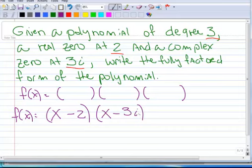Now the other thing you need to remember is according to the conjugate zeros theorem, if you have a zero at 3i, you automatically have its conjugate, which is negative 3i. So even though it doesn't state that we have a zero at negative 3i, we do.